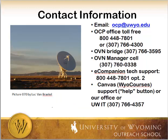For contact information, you can reach our office at 800-448-7801 or 307-766-4300. If it's less urgent, you can email us at OCP@uwyo.edu and you'll be forwarded to the person who can help you. OCP stands for Outreach Credit Programs. The OVN Bridge phone number — if you're in a video conferencing class and you're locked out — call 307-766-3595. You can also call the OVN manager's cell phone at 307-760-0338. If you're in an eCompanion/eCollege course, you can get tech support by calling our 800 number, option 2, for 24/7 help desk support.